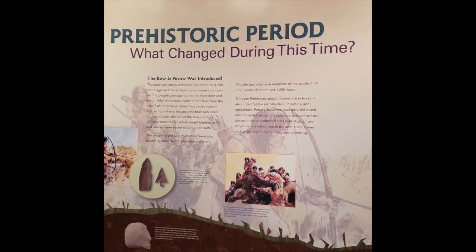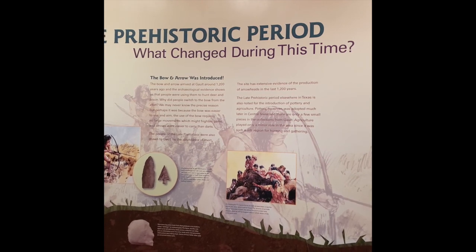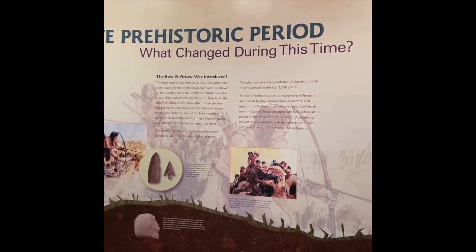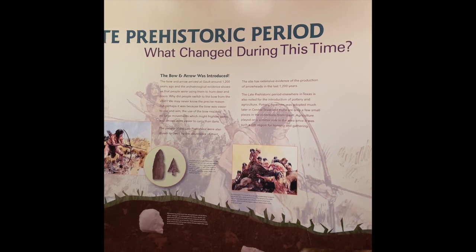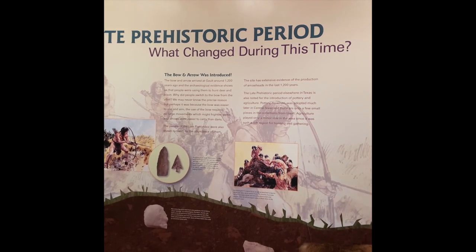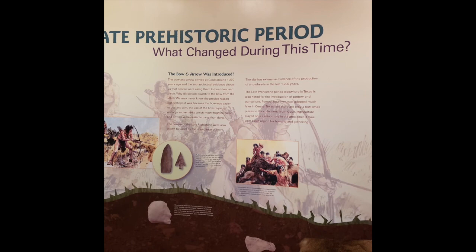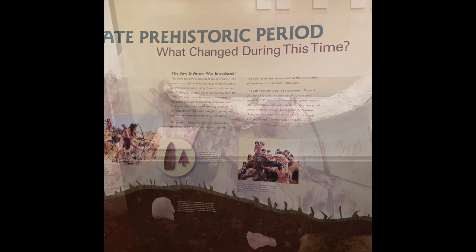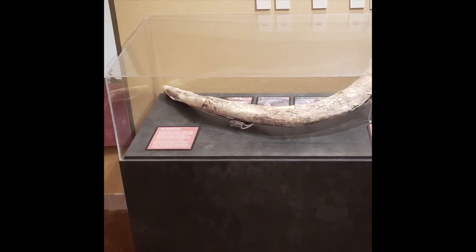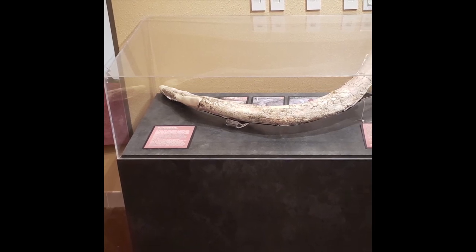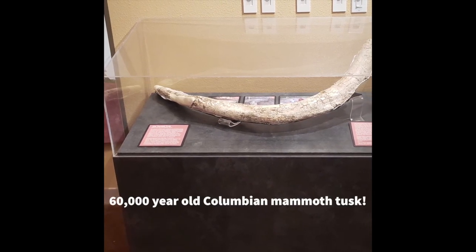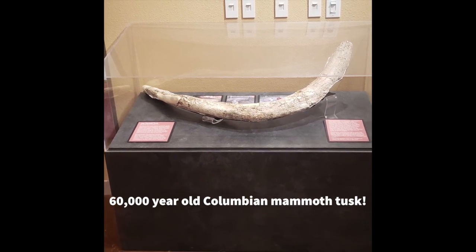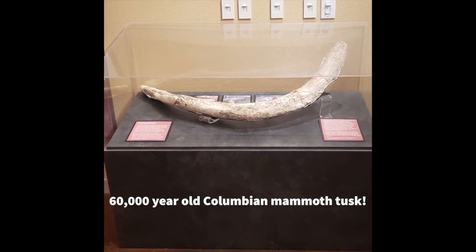About 1,200 years ago, the bow and arrow was developed. Before that, Paleo-Indians were using an atlatl, which is a long stick allowing you to throw a spear up to 150 feet. With the invention of the bow and arrow, hunting became easier. Archaeology is not limited to archaeological sites. This mammoth tusk was found in Temple in the Pepper Creek area.